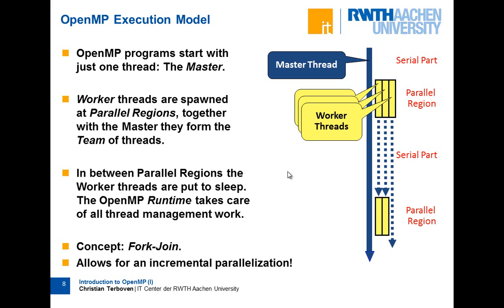The parallel region has a well-defined beginning and end, and in between the threads are managed by the runtime. There's some criticism that this fork-join model is inefficient because at the end of a parallel region you have to deal with the threads — but modern runtimes only put them to sleep, and at the next parallel region they are already available for fast pickup. This incremental approach lets you address hotspots in your code first without rewriting your whole program.